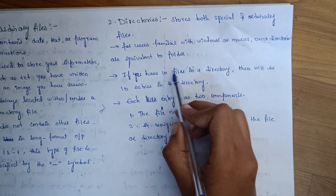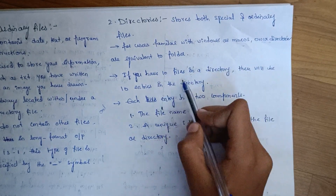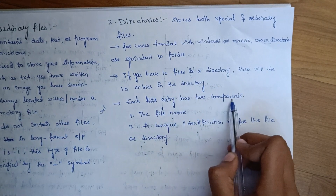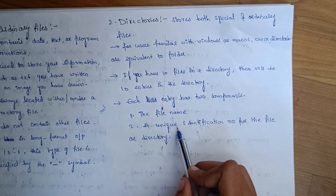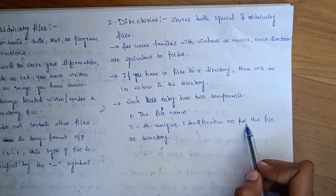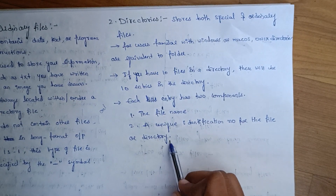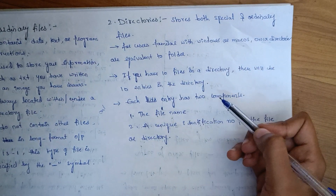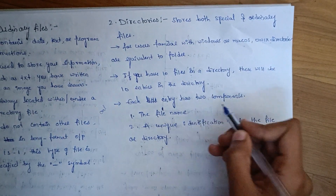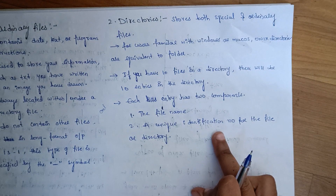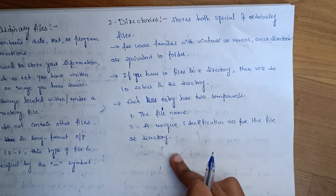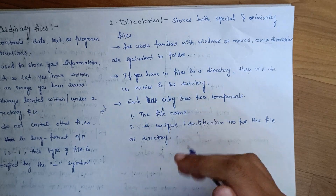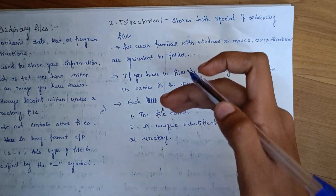Each entry in a directory has two components: the file name and a unique identification number for the file or directory. The identification number must not be the same for every file.